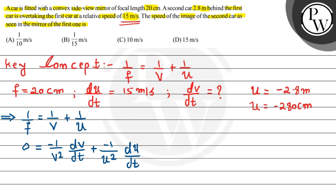We have to find dv/dt. So from here dv/dt will be equal to minus v²/u² times du/dt.